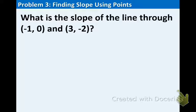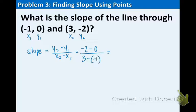What is the slope of the line through the points (-1, 0) and (3, -2)? First, label the coordinate points x1, y1, x2, y2. Now use the formula: (y2 - y1) over (x2 - x1). Substituting: (-2 - 0) over (3 - (-1)), which is -2 over 4. Simplifying, we get -1/2. That's the slope of this line.